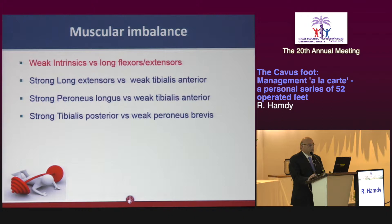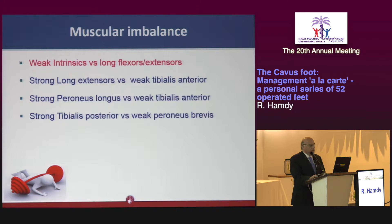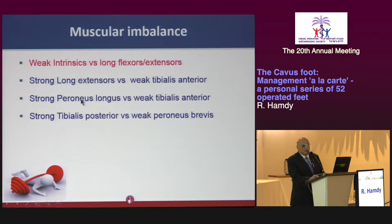In Charcot-Marie-Tooth, the first imbalance that happens is paralysis of the intrinsics, which control the balance between the long toe flexor and long toe extensor. Once you lose them, the toes go into hyperextension — the beginning of all the contractures. You have a very weak tibialis anterior causing foot drop, and the long toe extensor compensates by dorsiflexing the foot and clawing the toes. A relatively strong peroneus longus, inserted at the base of the first metatarsal, pushes the first ray into equinus.